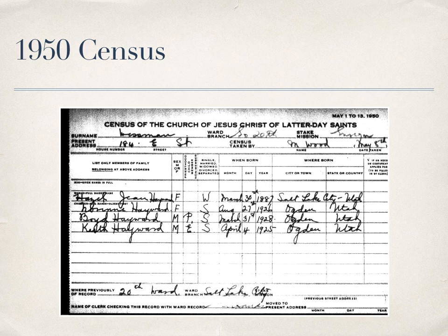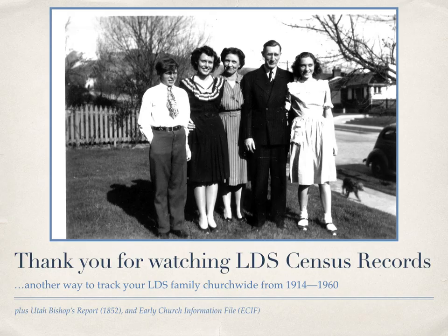Here's a 1950 census. In this one, the location of birth has been added — the city or town, and the state or country. I actually found myself in the 1950 census, so that was pretty interesting. You can see these LDS census records, and some of the others we've talked about today, can be very useful for tracking your ancestors. Have a good time searching, and thanks for watching.